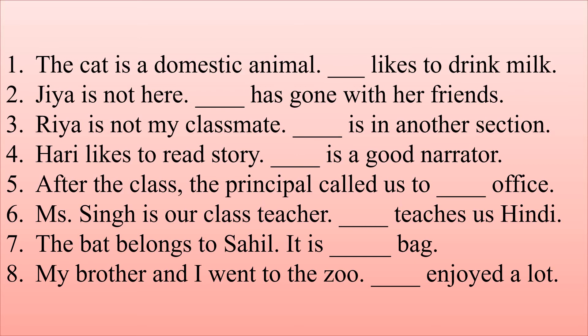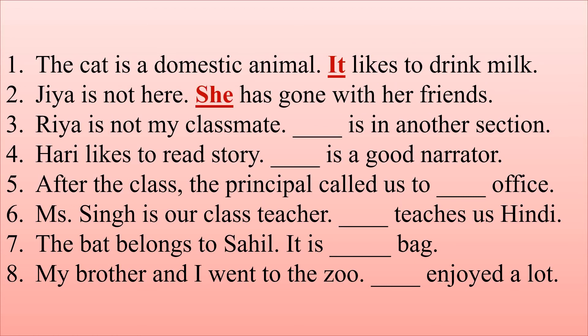The cat is a domestic animal. Dash likes to drink milk. Cat ke place pe hum kaun sa pronoun use karenge? Animals ke liye hum 'it' pronoun use karate hain. So here we will write 'it'. Next, Jiya is not here. Jiya is a girl. Dash has gone with her friends. So Jiya ki place pe hum kaun sa pronoun use karenge? Kyunki Jiya girl hai, is liye hum yaha 'she' use karenge. Girls ke liye hum 'she' use karate hain, and boys ke liye hum 'he'.